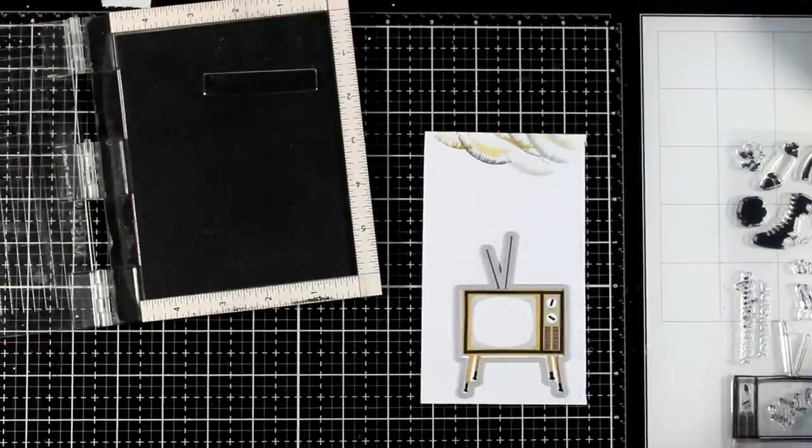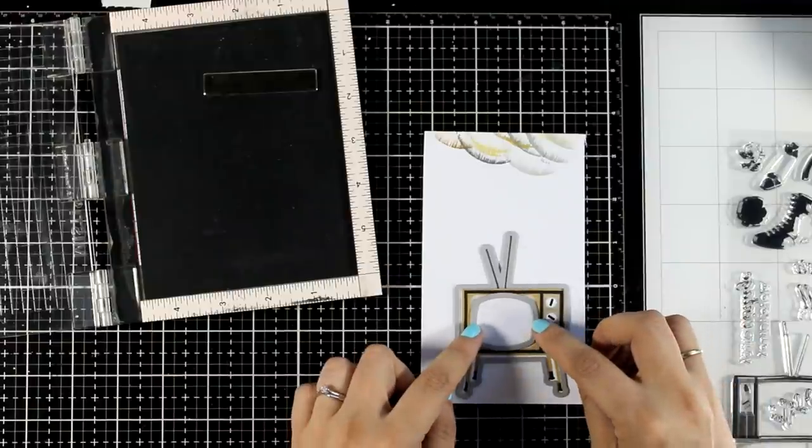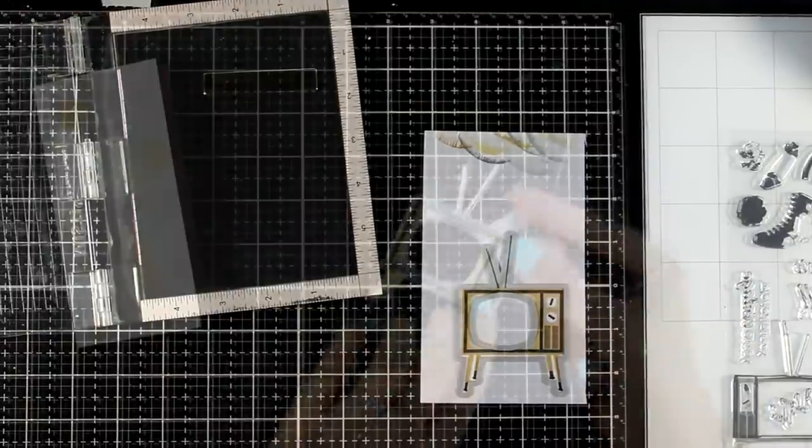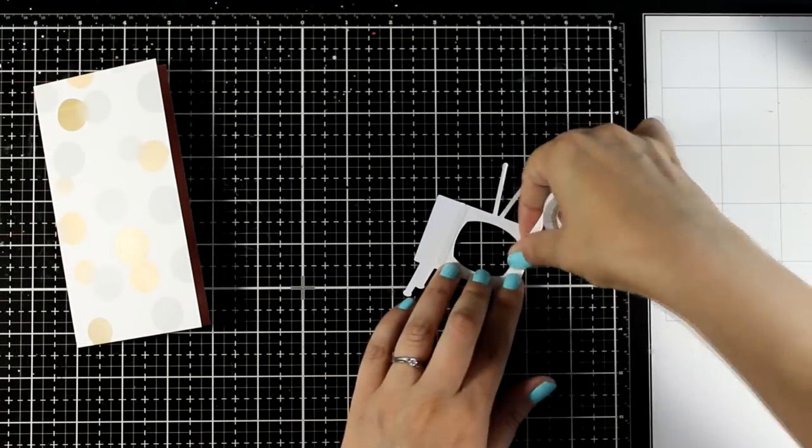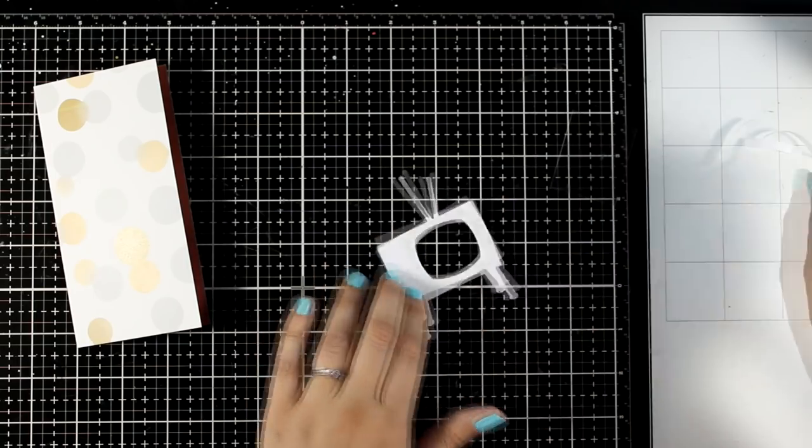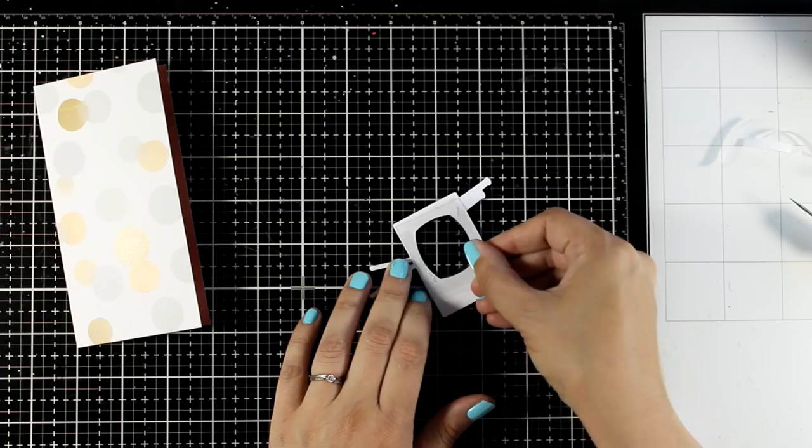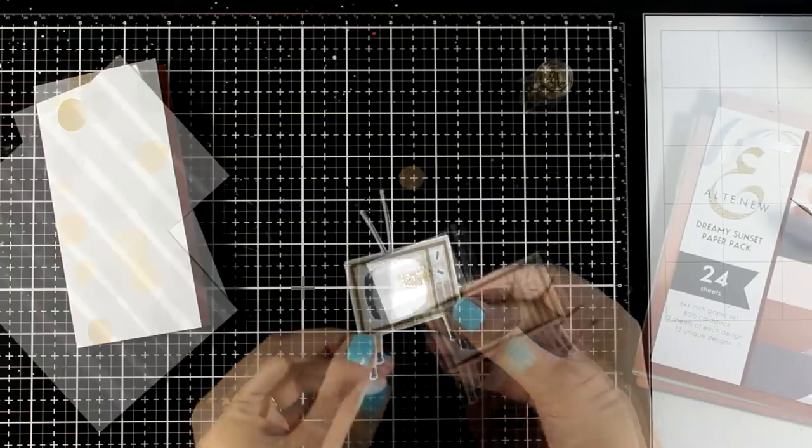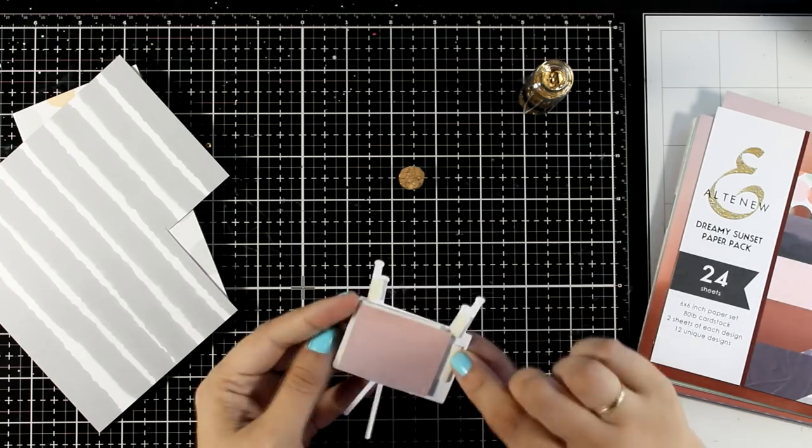And you can just stick this TV set along with a sentiment on top of your card base. I am going to just take it a step further and create a shaker card out of it just because I think it is going to look so cute. I did use the dies to cut it out as well as to cut out the opening at the center. I do add some double sided tape at the back so that I can stick the acetate and now I am going to add some foam tape at the back which is going to ensure that all my shaker elements are going to stay in place.